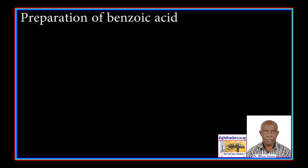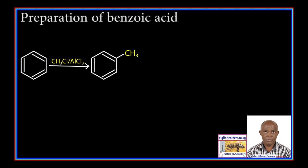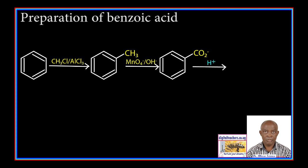Preparation of benzoic acid: Benzene is reacted with methyl chloride in the presence of aluminum chloride to form methylbenzene. Methylbenzene is reacted with alkaline potassium permanganate to form a potassium salt, which is acidified to form benzoic acid.